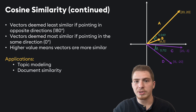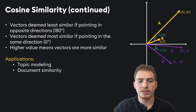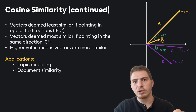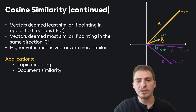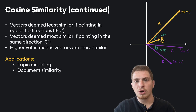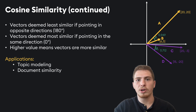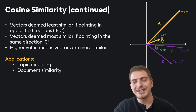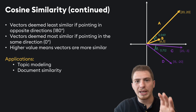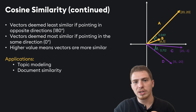Cosine similarity is also used in document similarity. In document similarity, query vectors are very different from document vectors — query vectors are usually represented as a sentence and are much shorter, while the documents themselves are much longer. When a document is longer, many of its ideas can be represented more strongly. Cosine similarity can find the conceptual similarities between queries and documents because it's not looking at the relative strength of the ideas in the corresponding vectors.